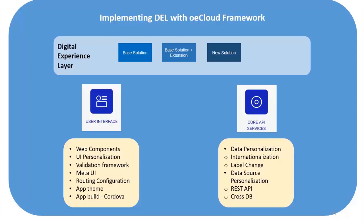There can be situations where you have a base solution already in place, meaning the API services and microservices are running and the enterprise is already using an application delivering those impacts. When you want to develop a new part of an application, it is not necessary to touch the older solution. You can simply build a digital experience layer based on the OECloud framework, which talks to the existing API services, using a set of web components configured as needed. This way, you are only building the digital experience layer required for that base solution, achieving the new set of goals. This is how OECloud helps in the implementation of DEL.